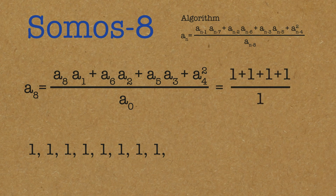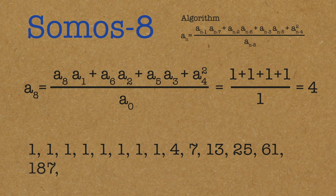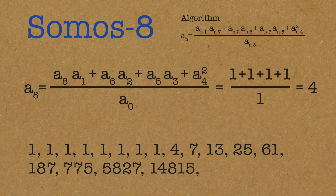So what's the next digit? It is 4. Then you go on: 7, 13, 25, 61, 187, 775, 5827, 14815. And this is the 16th term — still all integers.